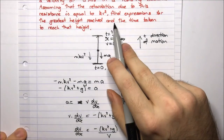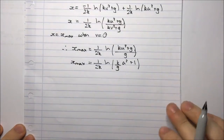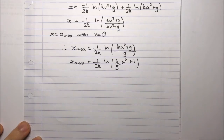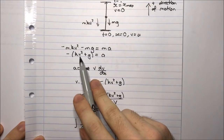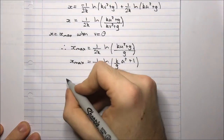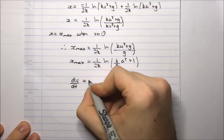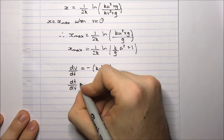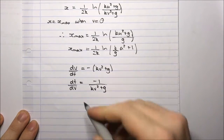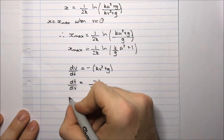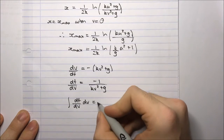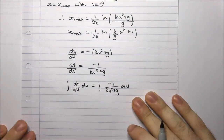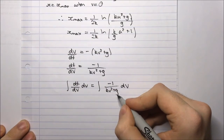The second part asks for the time taken to reach the greatest height. To involve the time variable t, we go back to the equation a equals minus(kv² + g) and use acceleration as dv/dt. So dv/dt equals minus(kv² + g). Flipping both sides: dt/dv equals negative 1 over (kv² + g). We integrate both sides with respect to v — flipping the equation is a common technique to allow easy integration.